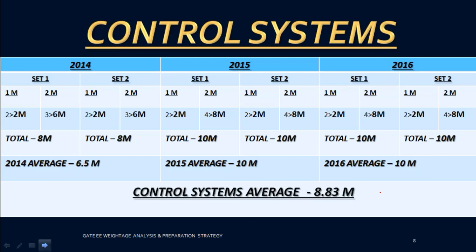Control Systems is equally important as Electric Circuits, also carrying 8.83 marks. The yearly averages were 6.5, 10, and 10. This year you can expect around eight to ten marks. Control Systems requires a lot of practice. The three subjects that require the most practice are Circuits, Control Systems, and Signals and Systems, because they involve heavy mathematical applications.